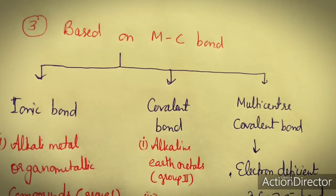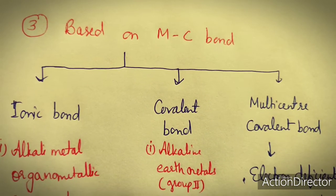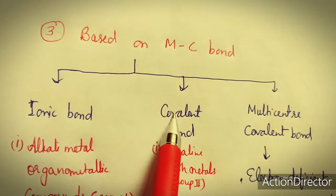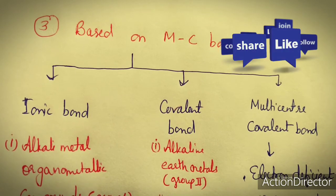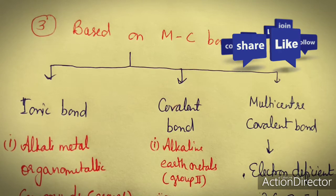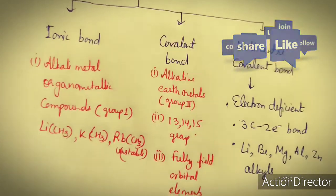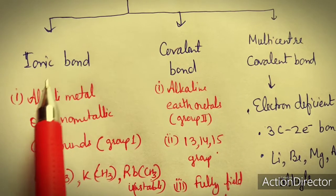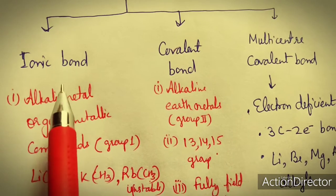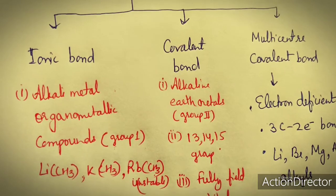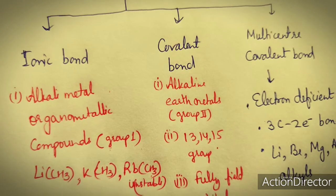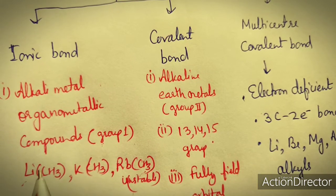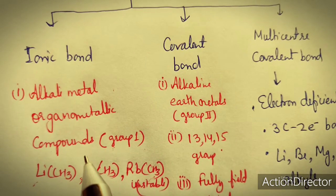The third classification is based on the nature of the MC (metal-carbon) bond. The MC bond may be ionic, covalent, or multicenter covalent. For ionic MC bonds, alkali metals of group 1 generally form ionic bonds with carbon. Examples of ionic organometallic compounds include LiC≡CH, KC≡CH, and RbC≡CH (though the rubidium compound is unstable). These fall under the ionic organometallic compound category because the metal-carbon bond is ionic.